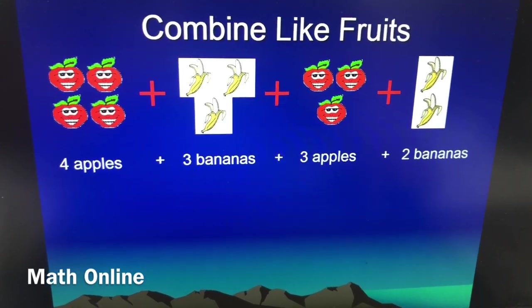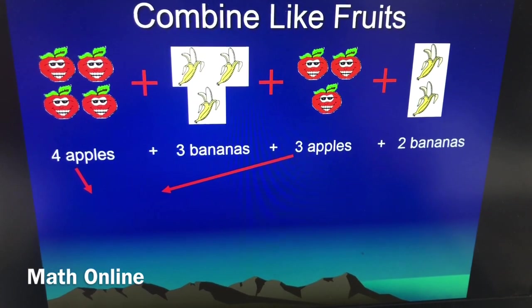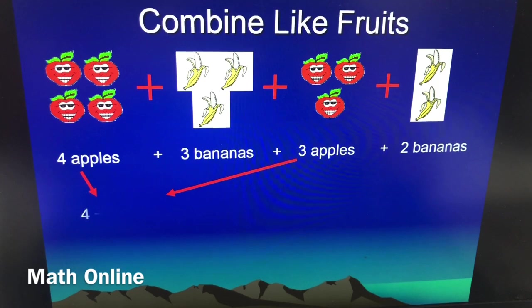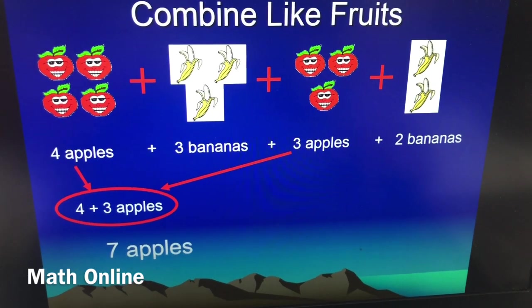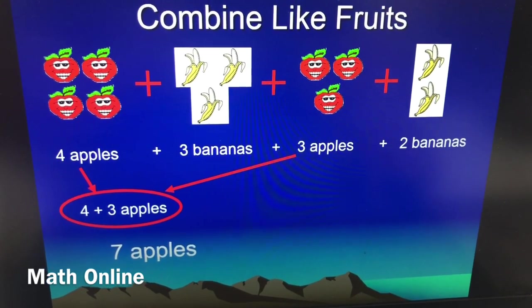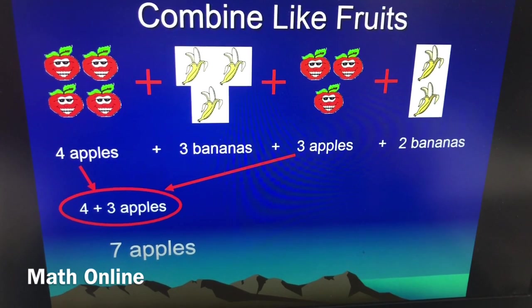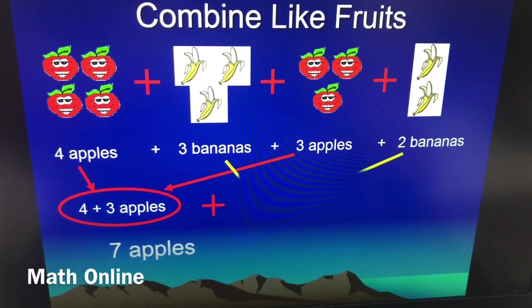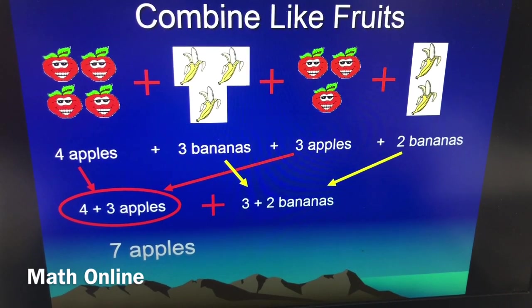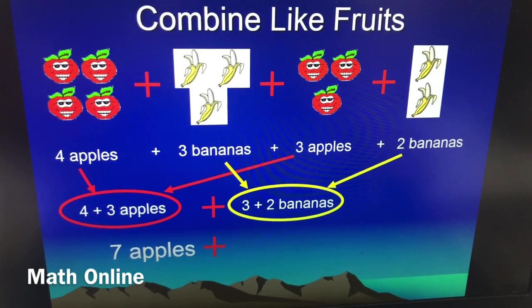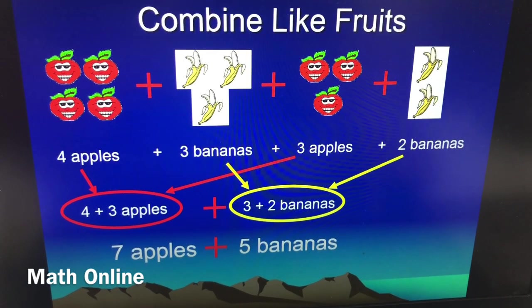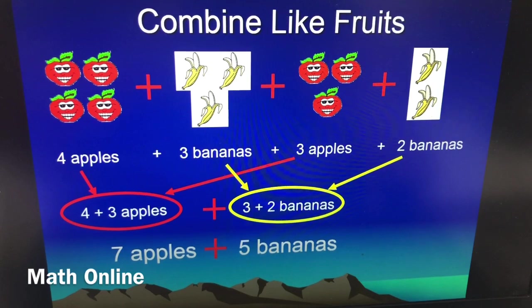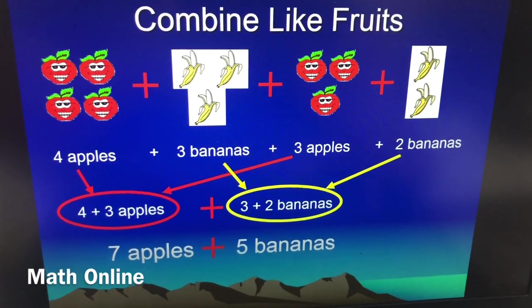So let's go ahead and try to combine those and see what we get. So if I combine the apples, we should get a total of seven apples, right? Because four plus three is seven. Now if we combine our bananas, which is three bananas plus two bananas, we should get five bananas. Right, that's the whole idea, the whole concept behind that.